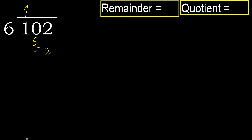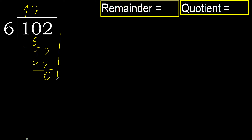Next: 42. 6 multiplied by 7 is 42, not greater. Subtract.